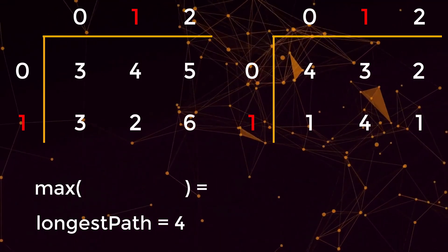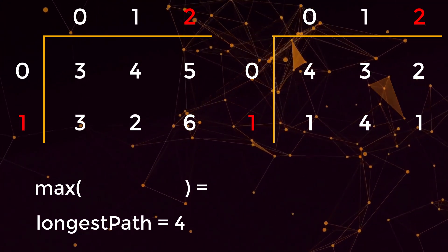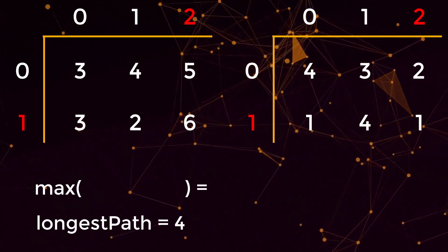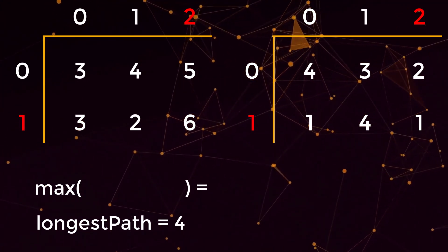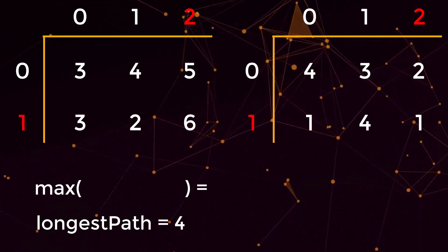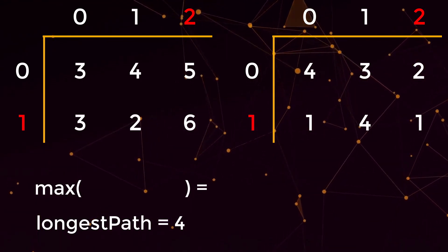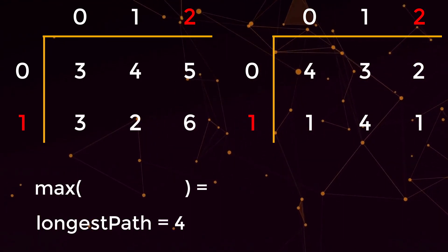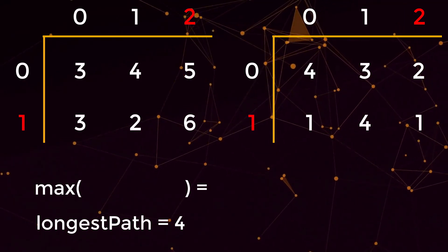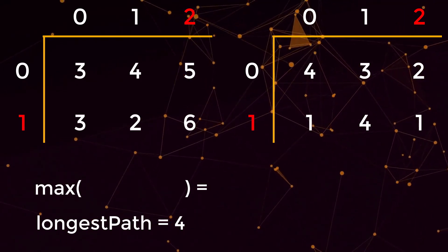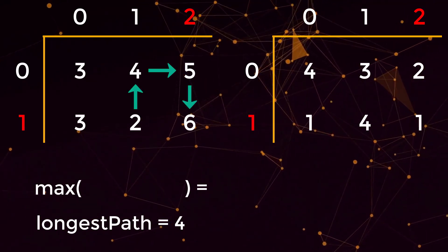Finally we move to position (1,2). We've already visited it, so we return the cached value of one. By the end of iterating over the entire matrix, our longest path is four. The longest path can technically come from two different paths of size four.